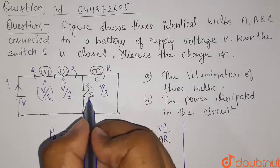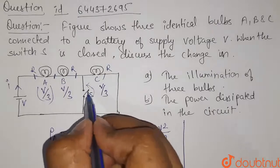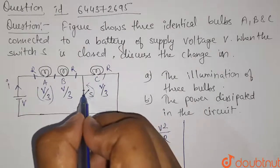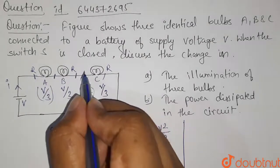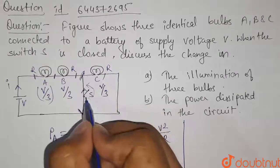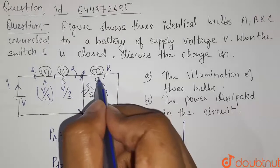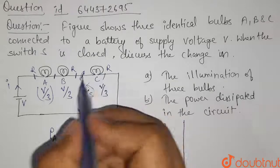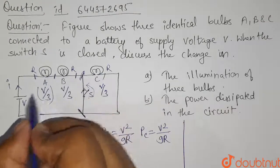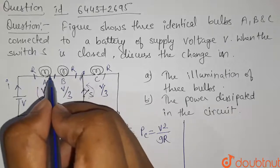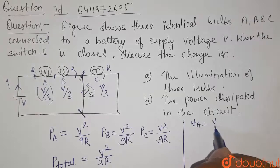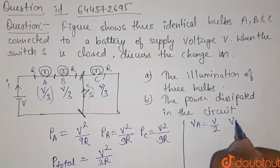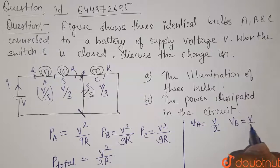In the second case, when the switch becomes closed, bulb C is short-circuited, because the potential difference across it becomes zero. Therefore, the current through bulb C also becomes zero. Now only two bulbs remain in the circuit, connected in series, so the potential difference across bulb A equals V/2 and across bulb B equals V/2, since both are identical.